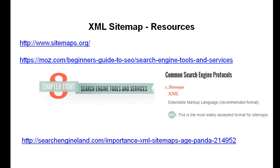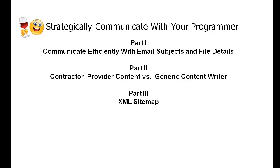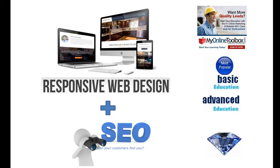The point is to simply speak to your programmer and ask them if they're properly implementing an XML sitemap. And if you're doing this on your own, just be aware of these resources because it's really not that difficult to implement on your own website. In summary, the three things we've covered are: communicating efficiently with email subjects and file details organized correctly, making sure you provide unique content, and being aware from a technical perspective that your XML sitemap is being updated periodically.